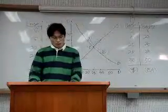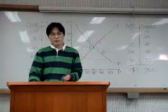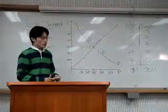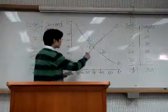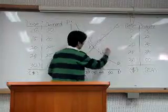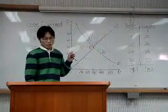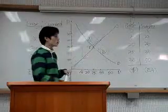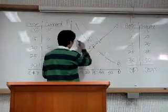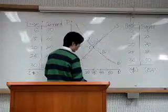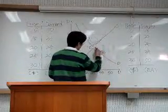Now, let's apply the shift of demand curve to this graph. If consumers' allowance increases, the demand curve shifts outward. In this case, both equilibrium price and equilibrium quantity also increase.